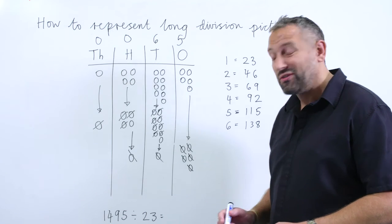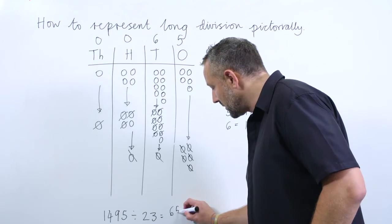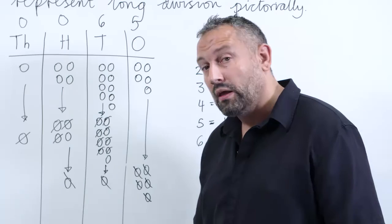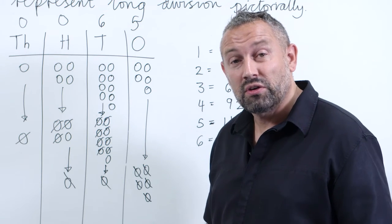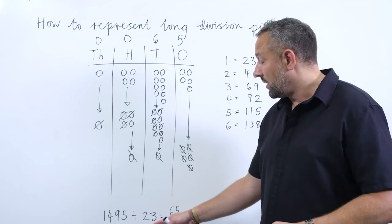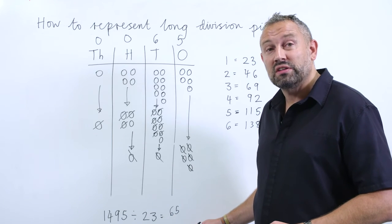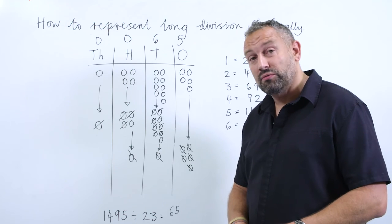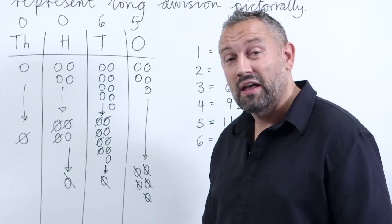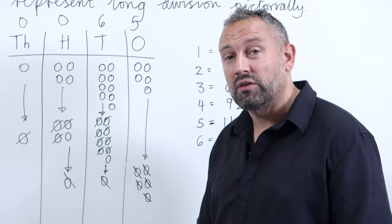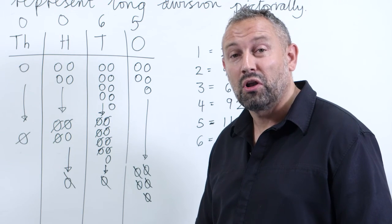1495 divided by 23 equals 65. Again, the children will need to use the inverse, their knowledge of multiplication, and look at 23 multiplied by 65 to get 1495. And that is how we can use a pictorial method to represent and to solve long division problems.